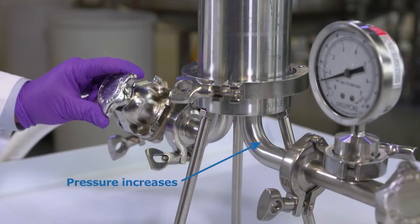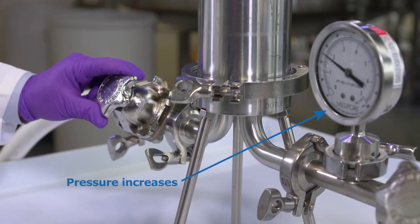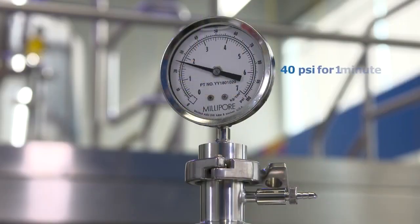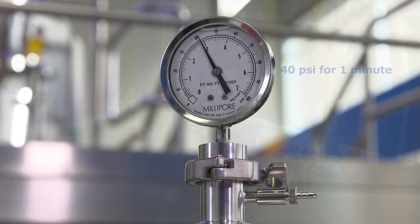With the outlet closed, the pressure in the housing will increase to whatever pressure is available at the inlet. Generally, we target 40 psi, but whatever pressure is available will suffice. Let the system stand at this pressure for one minute.